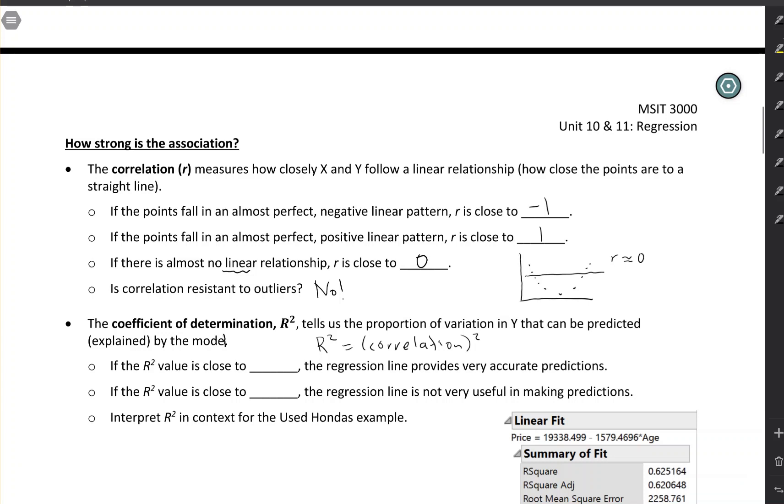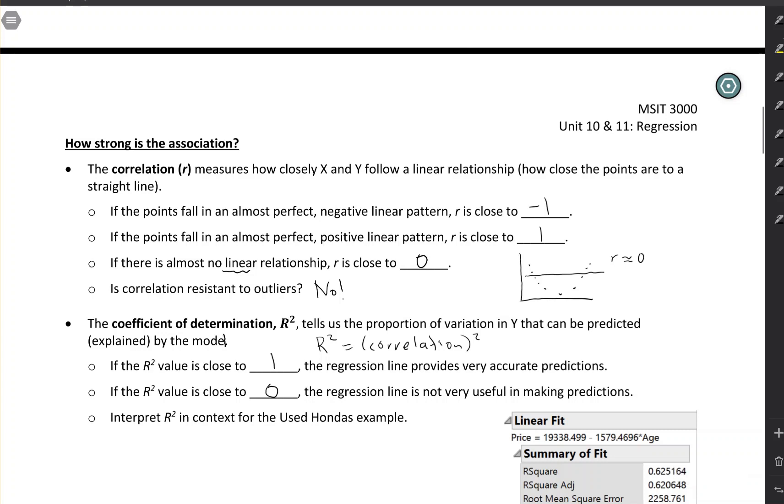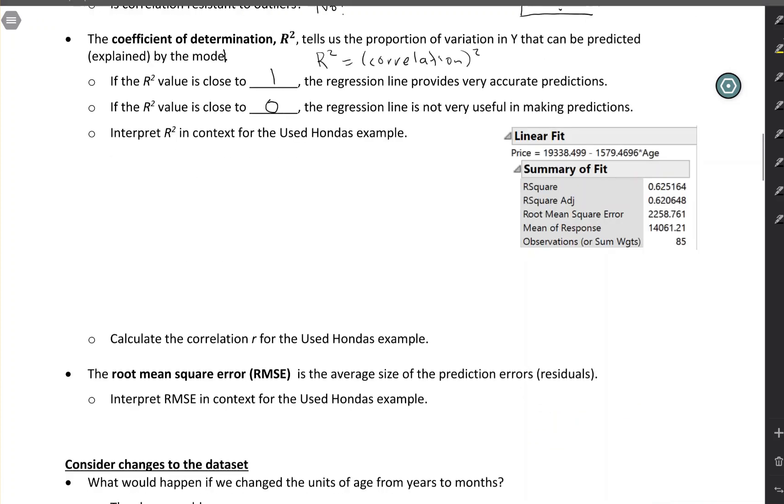So if your R squared value is very close to 1, that means that the regression line is giving you really accurate predictions. Close to 100% of the variability has been explained. Whereas if the R squared value is close to 0, that means your regression line is not very useful. It's not explaining very much of the variability. So let's look at it for the used Hondas example. We're using R squared from the output. We're not using R squared adjusted. You can just mark that out here.